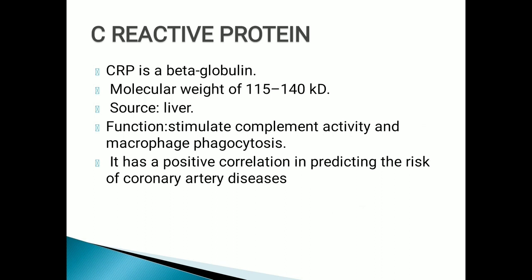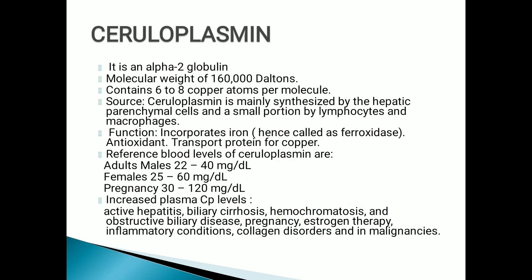C-reactive protein (CRP): the name came from the capsule of pneumococci. The liver produces this protein against the capsule of pneumococci, but it is elevated in every inflammatory condition. Its source is the liver and its function is to stimulate complement activity and macrophage phagocytosis. CRP has high sensitivity for coronary artery disease.